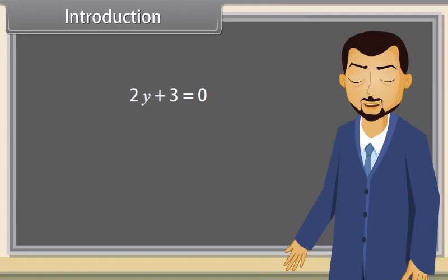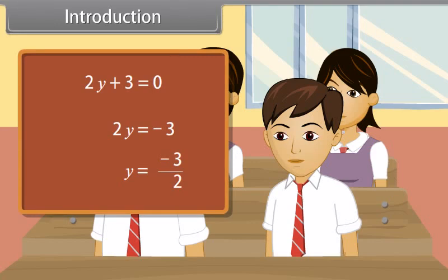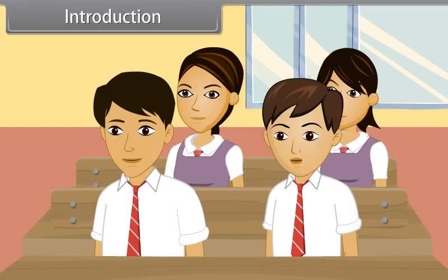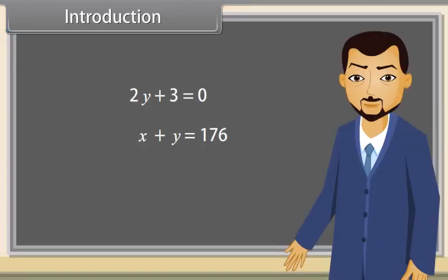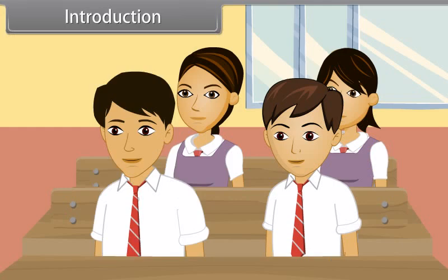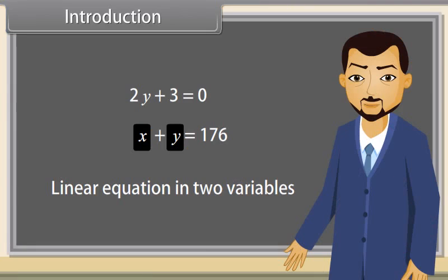Can you solve this equation? Yes, this is so easy. Now tell me which equation is this? This is also a linear equation. Yes, this is also a linear equation, but it has two variables, X and Y. So it is called a linear equation in two variables. We want to know more about this, sir. So we will study linear equations in two variables today.